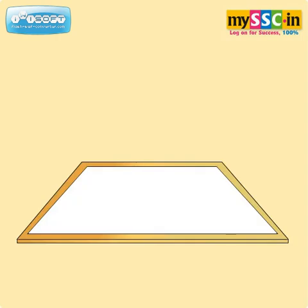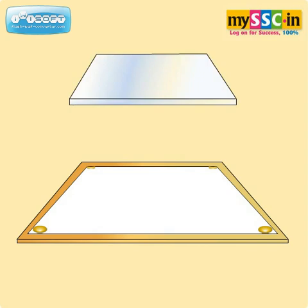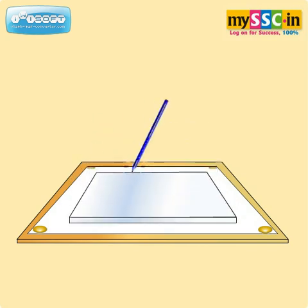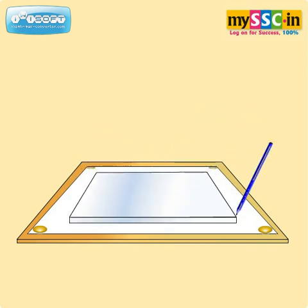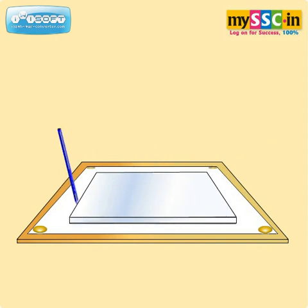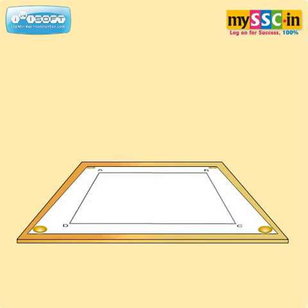Let's see the procedure of this experiment. Fix the drawing paper on the drawing board using drawing pins. Place the glass slab on it and mark its outline ABCD. Remove the glass slab.